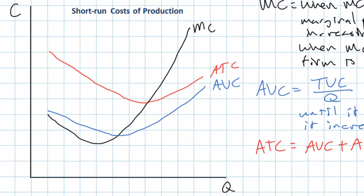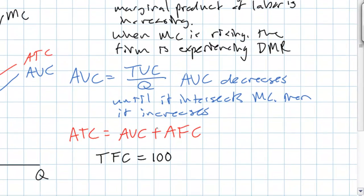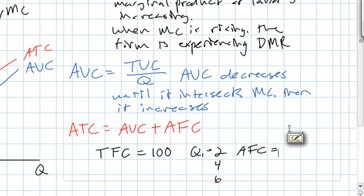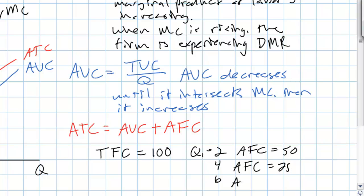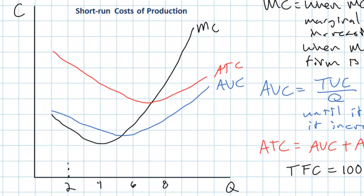Let's look at levels of 2, 4, and 6 units of output. Assume that this firm has a total fixed cost of $100, which includes the rent and interest it pays on its capital. The average fixed cost at any level of output is simply the total fixed cost divided by that quantity of output. So at 2 units, average fixed cost is $100 divided by 2, which is $50. When output increases to 4 units, average fixed cost decreases to $100 divided by 4, which is $25. And at 6 units, average fixed cost continues to decrease: $100 divided by 6 is $16.70.